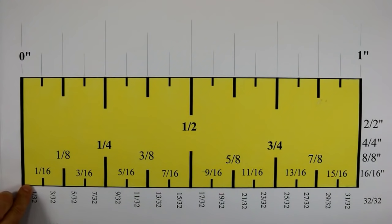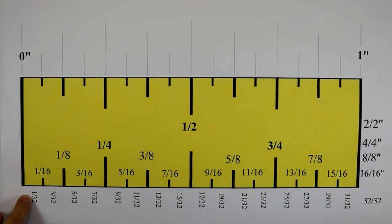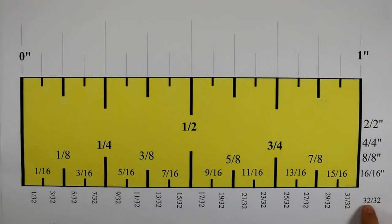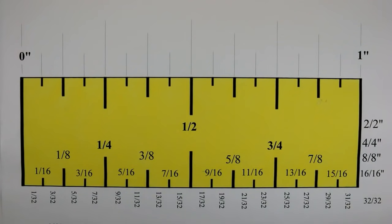Now if we were to divide one sixteenth by two, that would give us thirty-seconds. And so we would have a total of thirty-two thirty-seconds, which would give us one inch. You can keep dividing this down into smaller and smaller fractions, but in carpentry there is no point to it.